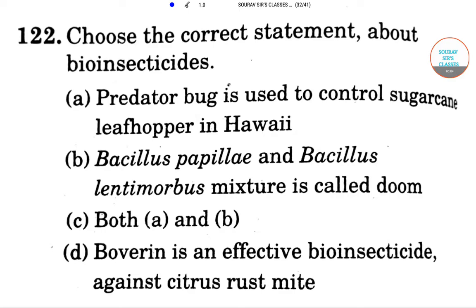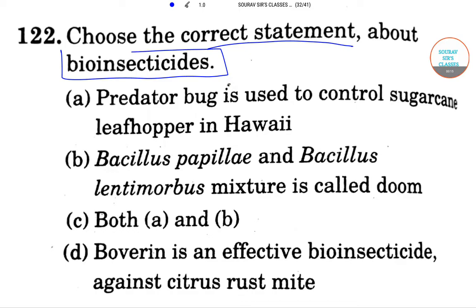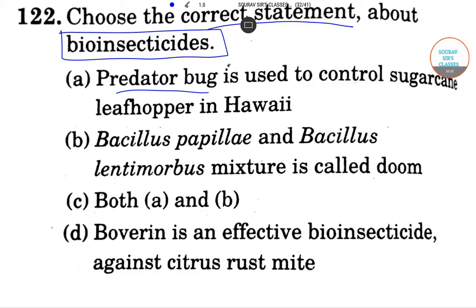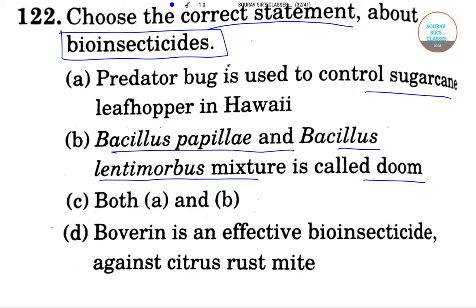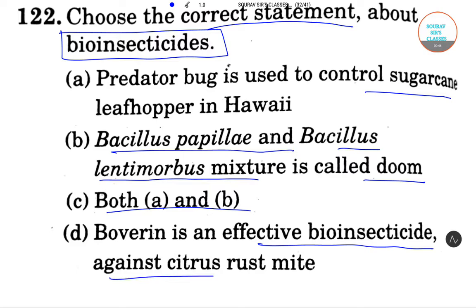Hello students, welcome to Shore Sir Classes. Today the question is about bio insecticides. The statements are: A - predator bug is used to control sugarcane leafhopper in Hawaii, B - Bacillus papillae and Bacillus lentimorbus mixture is called Doom, C - both A and B, and D - Beauveria is an effective bio insecticide against citrus rust mite.